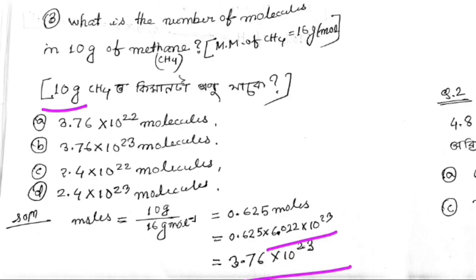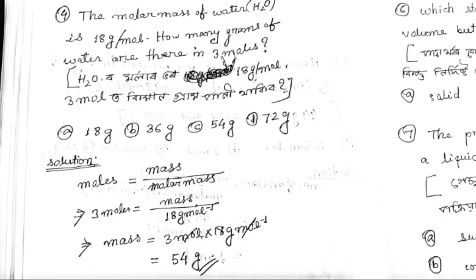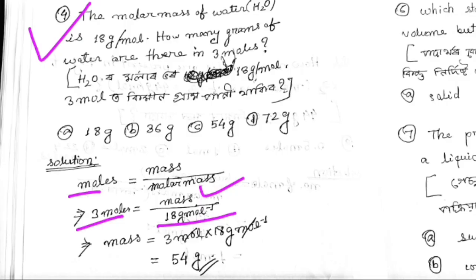The next question asks about 3.76 molar. I know the molar mass is 18 grams per mole, so that gives 54 grams. The answer is C.